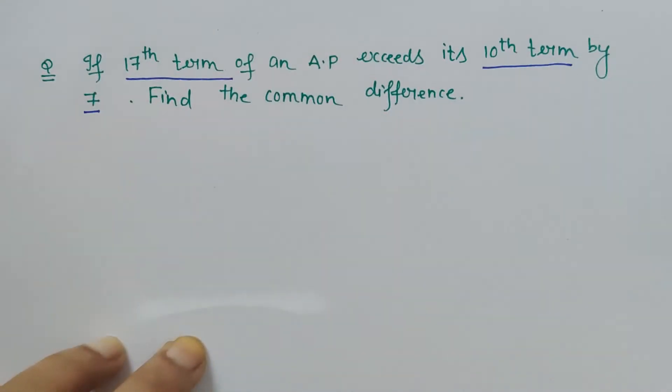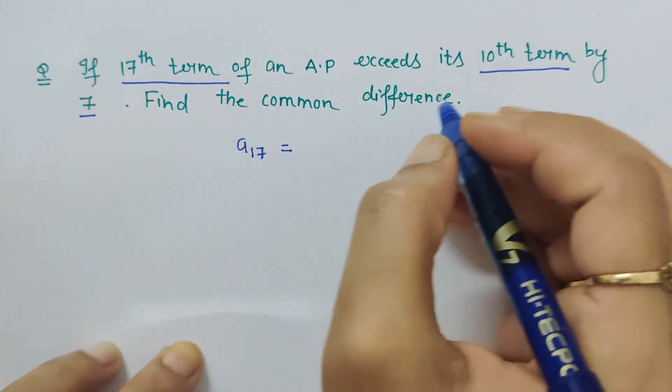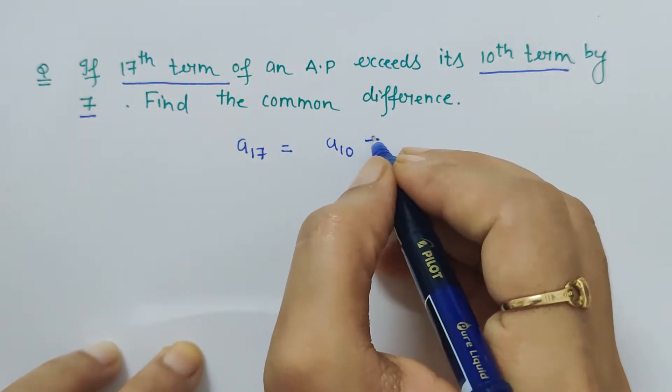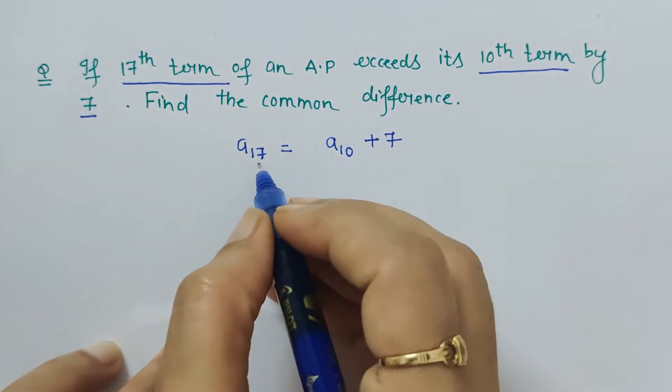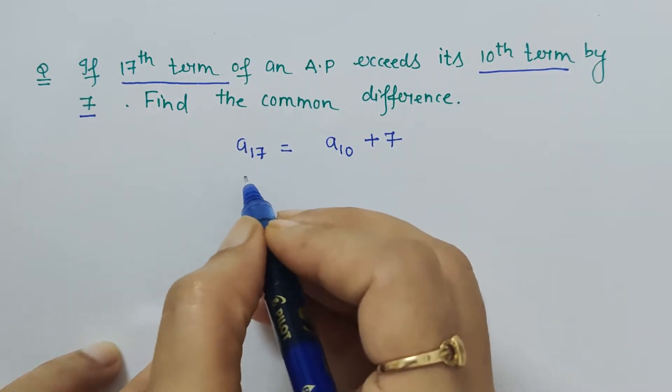What equation will be formed? The equation would be a17 exceeds its 10th term, means a10 by 7. That means a17 is 7 more than the 10th term.